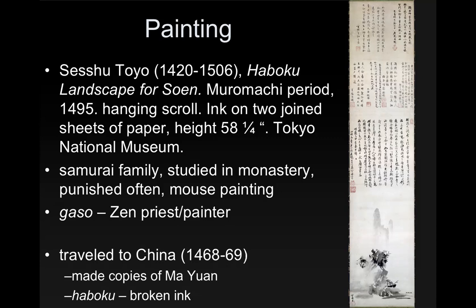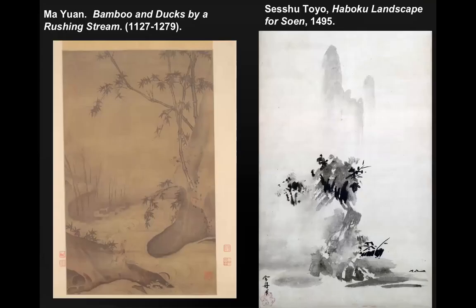Sesshu was what's called a gaso, which is a Zen priest painter, and they made most of the famous works during this time. He traveled to China from 1468 to 1469 and made copies of Ma Yuan, which we'll compare in a moment. This style of painting in Japan is called haboku, which means broken ink.